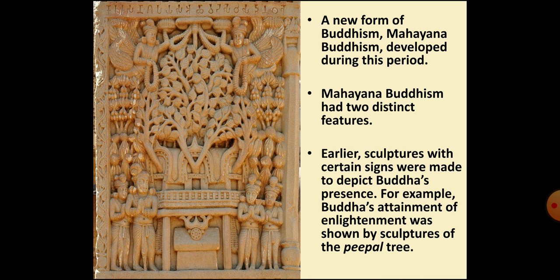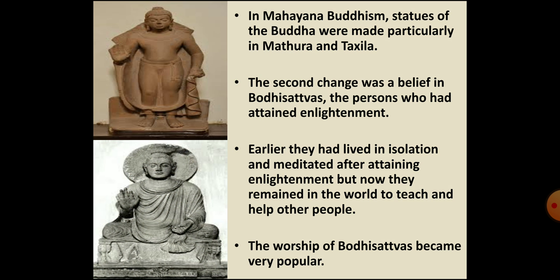The first major difference was that in the earlier form of Buddhism, certain signs were used in sculpture to show the presence of the Buddha — statues of the Buddha were not made. For example, look at this image before you, which is a sculpture from the Stupa at Sanchi. Here the sculptors carved the Bodhi tree and the empty seat below it, to show that the Buddha had attained enlightenment while meditating under the tree. However, in the new form of Buddhism, that is Mahayana Buddhism, statues of Buddha were made.